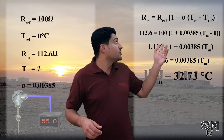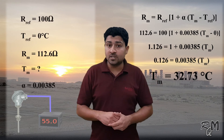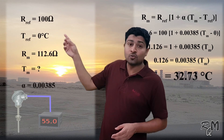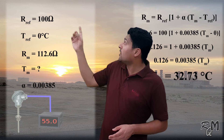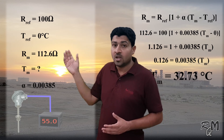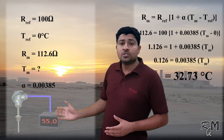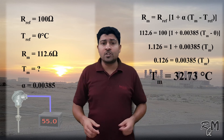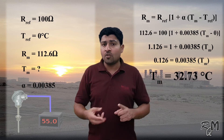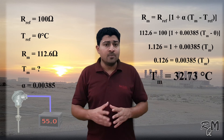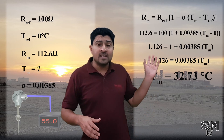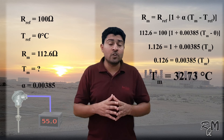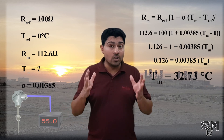You can use the same equation for PT1000 — only the reference resistance you have to change from 100 ohms to 1000 ohms, all other values will remain the same. You can also use the same equation for PT50 and PT500. I am sure if you apply this equation one or two times, you will memorize it for a long time.